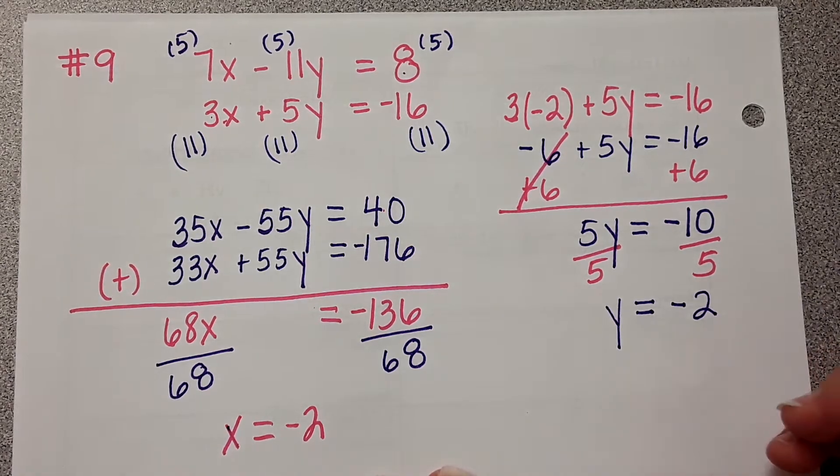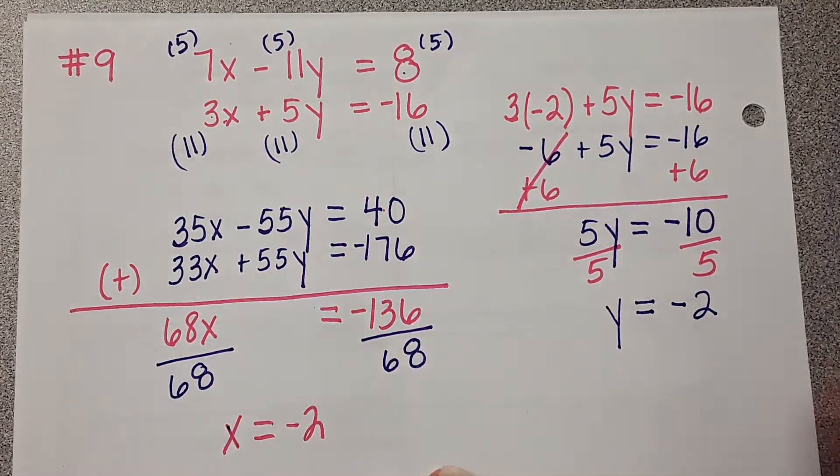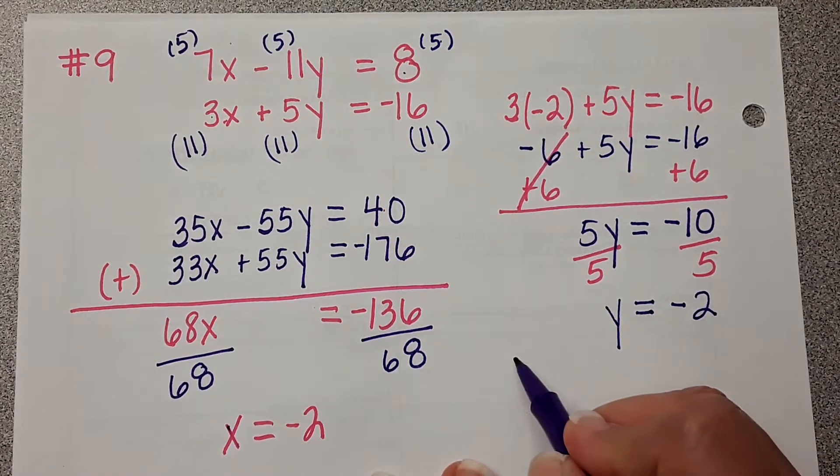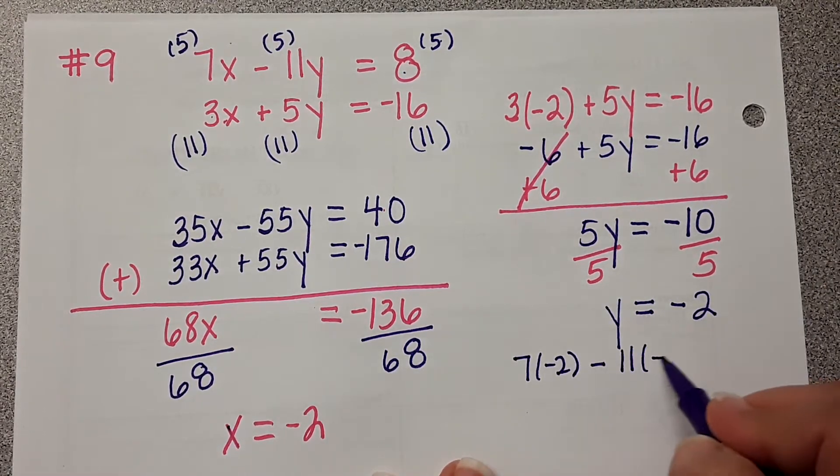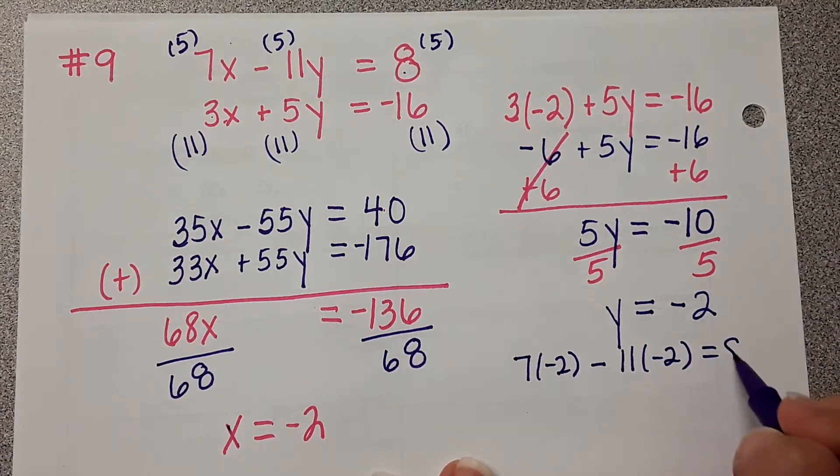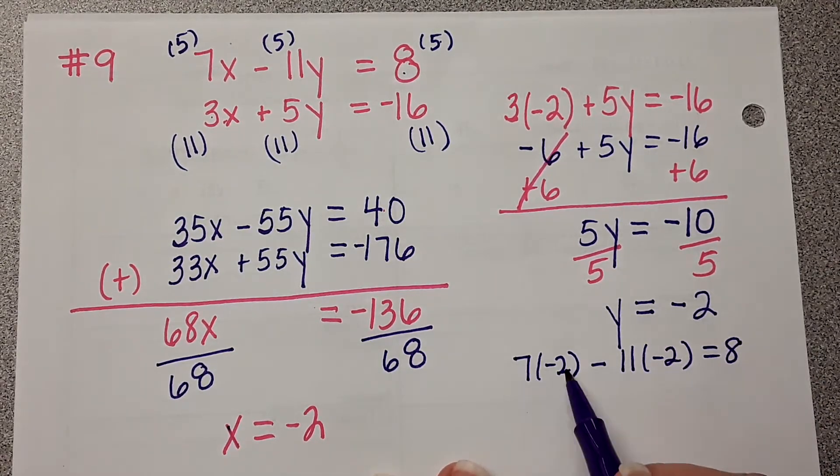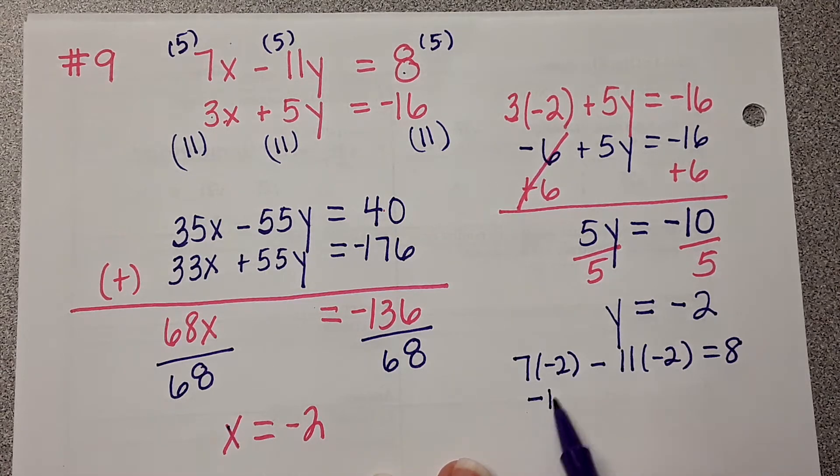Now let's do a quick check to make sure it works in the top equation. 7 times negative 2 minus 11 times negative 2 equals 8. 7 times negative 2 is negative 14.